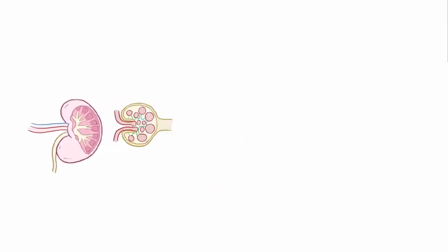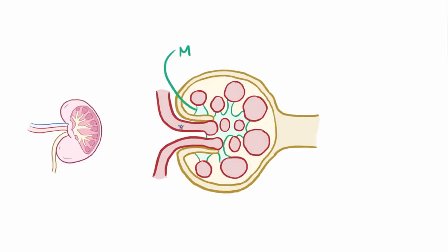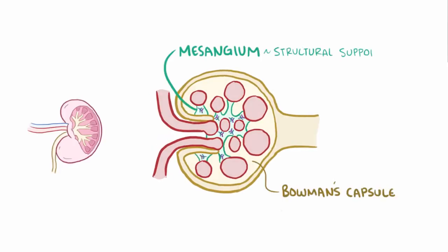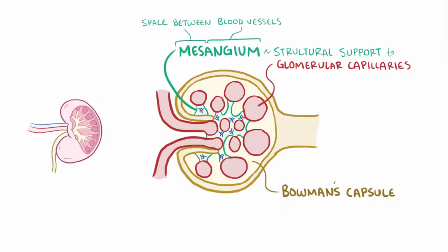The immune complexes specifically deposit in the mesangium, which is the tissue in the Bowman's capsule that offers structural support to the glomerular capillaries. The mesangium is continuous with the smooth muscles of the afferent and efferent arterioles, and fills in the space between the loops of blood vessels, hence the name.